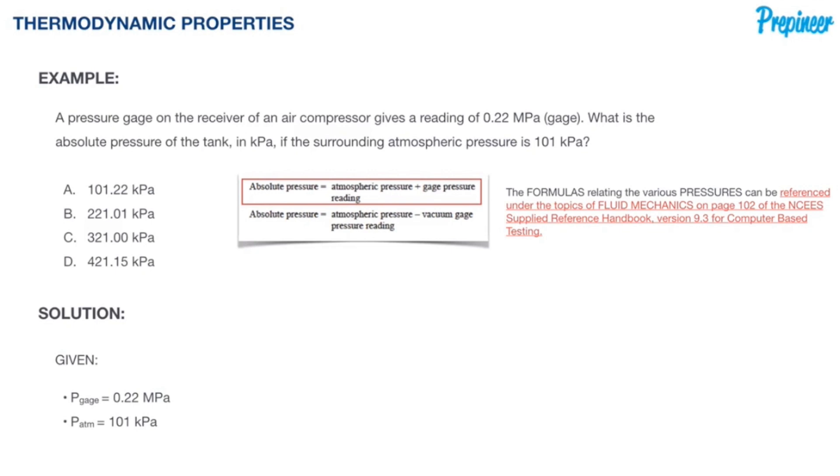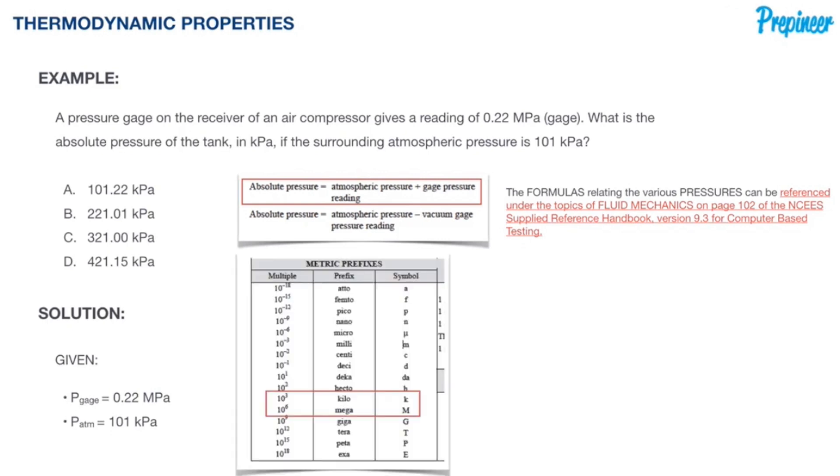Before we do anything, we must convert the gauge pressure from MPa to kPa. Remember, a kilopascal is 10³ Pascals, and a megapascal is 10⁶ Pascals. If you need to refresh yourself on metric prefixes, reference the table on page one of the reference handbook.